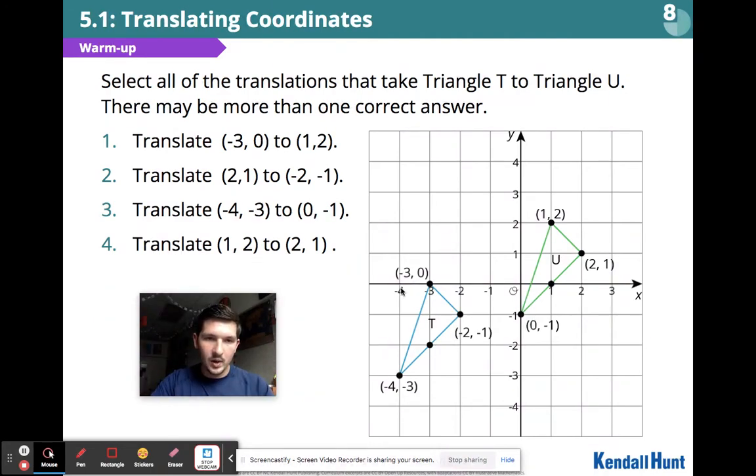If we're looking here, we're going from T to U. If we're going from negative 3, 0, that's the vertices on T, to 2, 1, that's on U. The vertices match up on itself, it doesn't rotate or turn. It's the exact same vertices and we're going from T to U. So number 1 is correct.